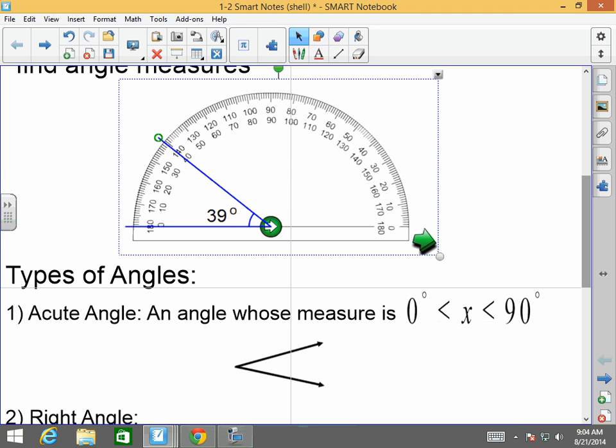An acute angle is something that is greater than 0 but less than 90. Not 90 either on the money. Like that. That's an acute angle. Even if I went 89.999, that's an acute angle. Anything greater than 0 but less than 90.